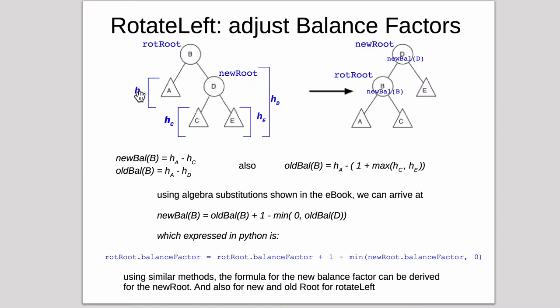These are the heights. The height of the A subtree, the height of the C subtree, the height of the E subtree, and the height of the H subtree, I mean the D subtree. So you can write these equations. The new balance will be the height of A minus the height of C. So if you look over, this is where we're going. So the new balance of B will be the height of A subtree minus the height of C.